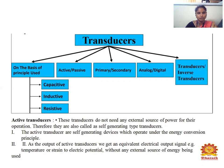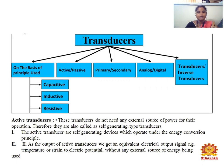What is meant by an active transducer? This transducer does not need any external source of power for its operation; therefore, they are also called self-generating type transducers. The active transducer is a self-generating device which operates under the energy conservation principle. The output of an active transducer is an equivalent electrical output signal — for example, temperatures and strains are converted through electrical potential without any external source of energy.